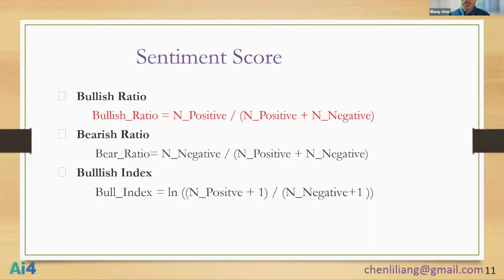Once we have sentiment points, we can translate them into a sentiment score. There are three different ways to derive the sentiment score. The first is the bullish ratio — the ratio of positive points to total positive and negative points. The bearish ratio is the number of negative points over total positive and negative points. Someone can also derive the bullish index, which is the log of (net positive points plus 1) divided by (negative points plus 1). In my analysis, I use the bullish score as the sentiment score.